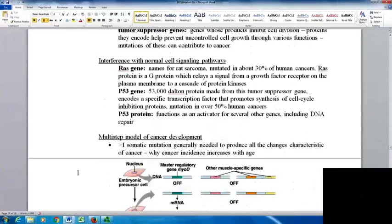Some genes we've studied a lot regarding cancer include the RAS gene, named for rat sarcoma, mutated in about 30% of human cancers. The RAS protein is a G protein that relays a signal from a growth factor receptor on the plasma membrane to a cascade of protein kinases. Remember, the G protein receptor is one of those receptors used in cell-to-cell communication.